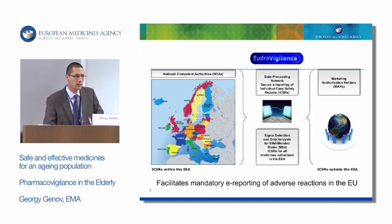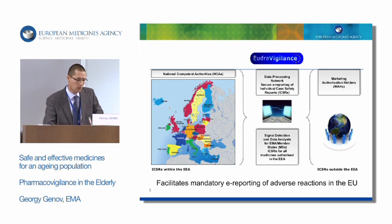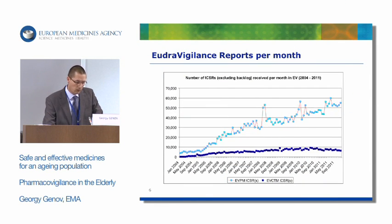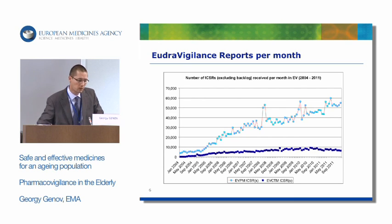EudraVigilance is a system that was created 10 years ago to collect suspected adverse reactions for all medicines authorized in the European Economic Area. These suspected adverse reactions are either occurring within or outside of the European Economic Area, and we use that system for signal detection. Since 2005, electronic reporting became mandatory. Nowadays, we receive about 50,000 to 60,000 reports per month — a significant amount of information.